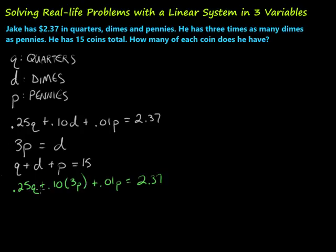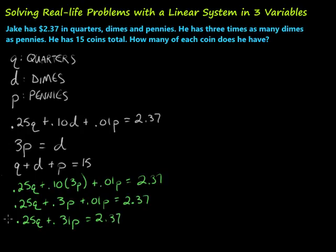Now we can clean this up a little bit, and we have 0.25Q plus 10 cents times 3 would be 30 cents, or we could think of it as 0.3, plus 0.01 times P equals 2.37. Now combine those like terms, and finally we have 0.25Q plus 0.31P, be careful there, equals 2.37. So there's one equation that I'm going to have that I'm going to come back to. This one has just Q's and P's in it.